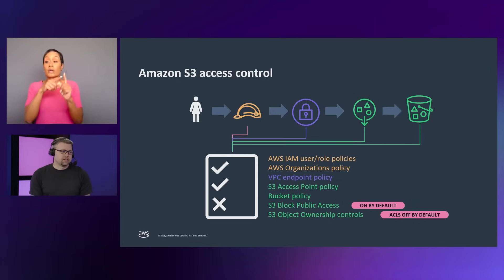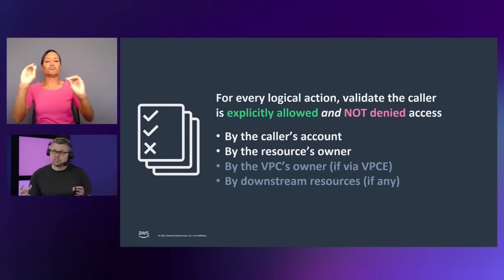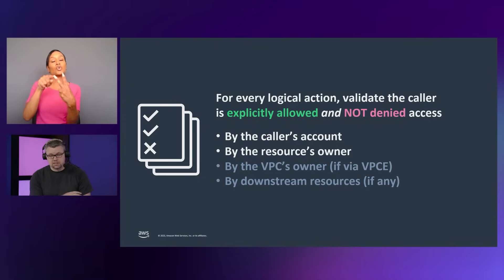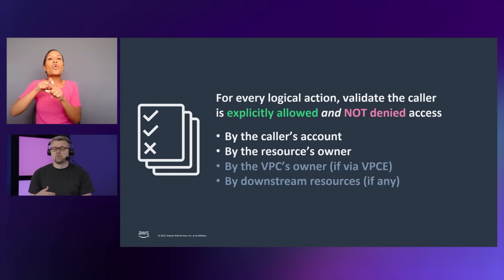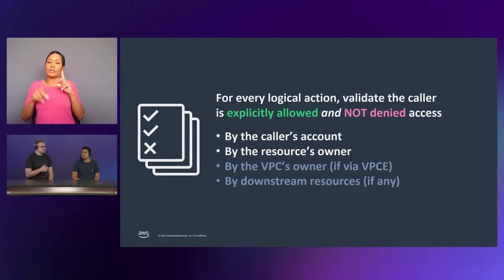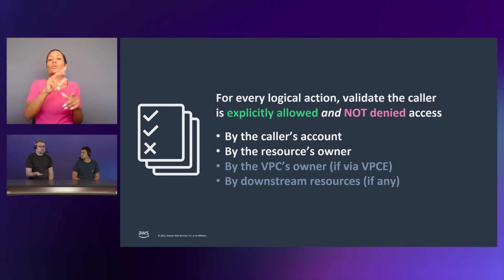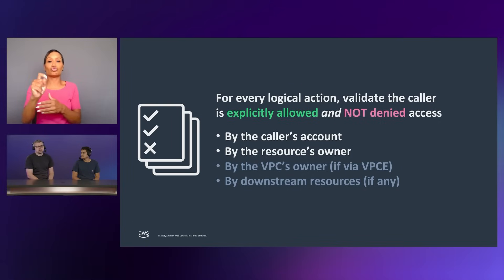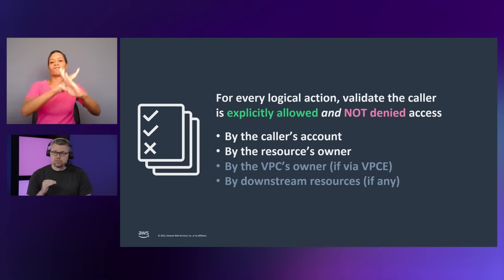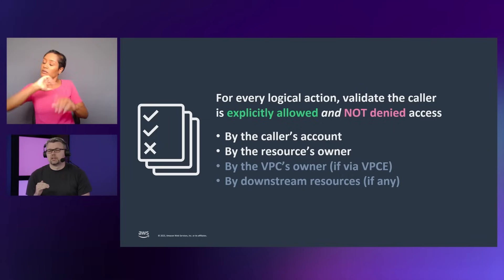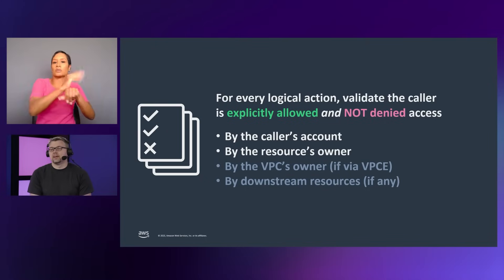All these policies work together — we evaluate them all together to enforce two invariants. First, you must be explicitly allowed and not denied by the caller's account: an IAM user or role can never do anything that its account doesn't allow. Second, you must always be allowed and not denied by the resource owner — in S3's case, the bucket owner or access point owner. We also enforce restraints based on the VPC owner's controls if traffic came from a VPC, and verify authorization on any downstream resources like KMS keys.